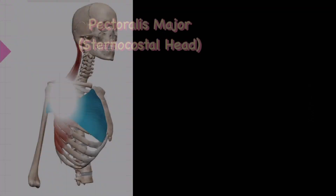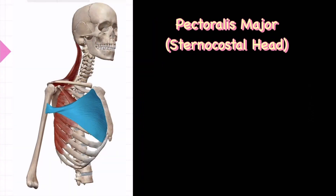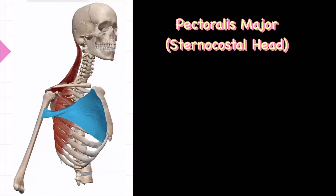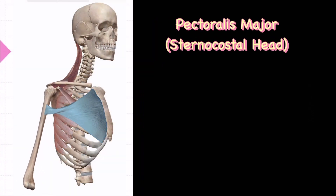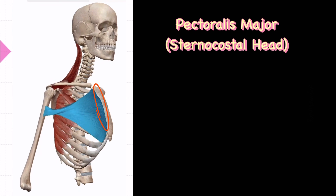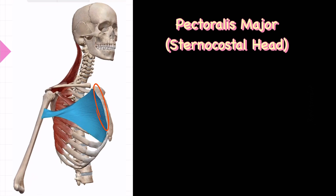The pectoralis major muscle sternocostal part attachment begins with the anterior surface of the sternum to the 1st to 6th costal cartilage of the ribs, and it inserts at the crest of the greater tubercle of the humerus.